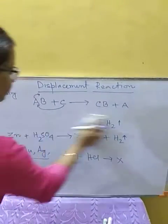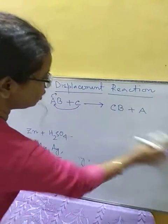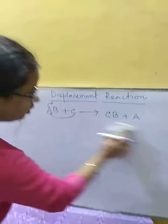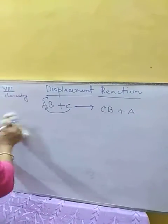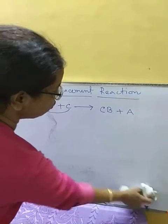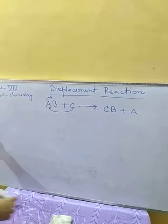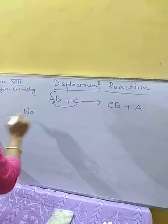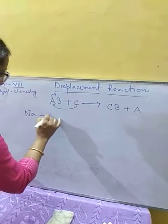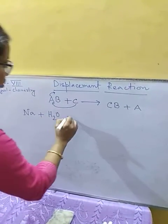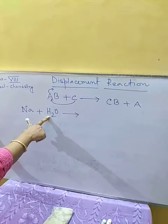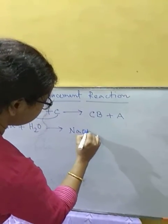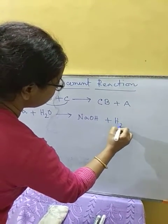Highly reactive metals like sodium and potassium can react with cold water to displace hydrogen and produce sodium hydroxide or potassium hydroxide. Since sodium and potassium are very highly reactive, even in cold water conditions they will displace hydrogen and produce sodium hydroxide along with hydrogen gas.